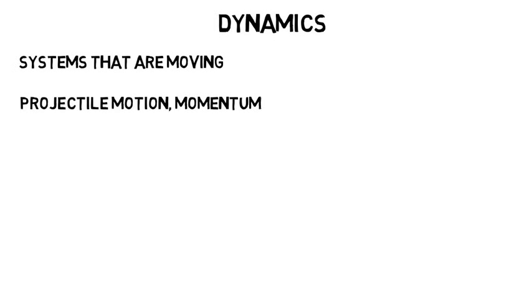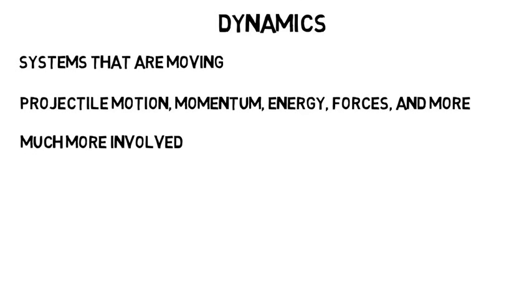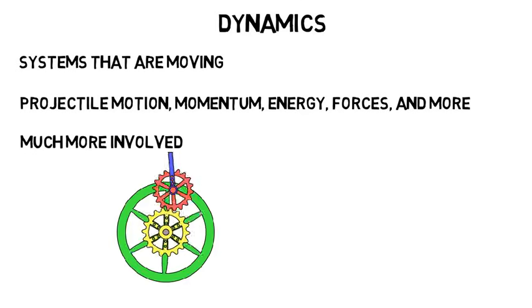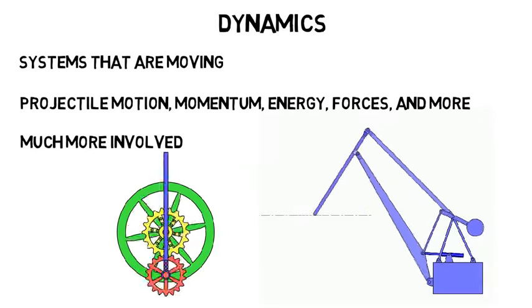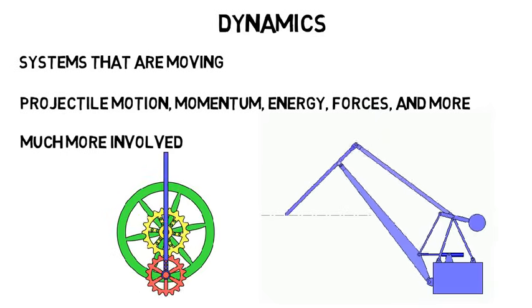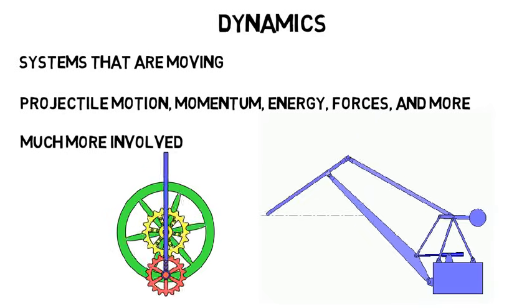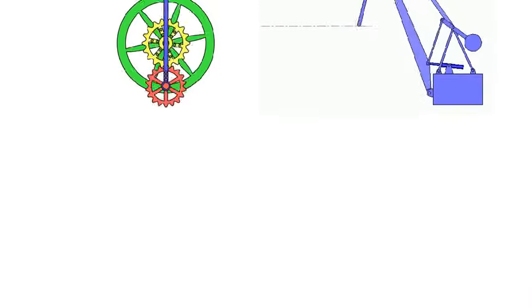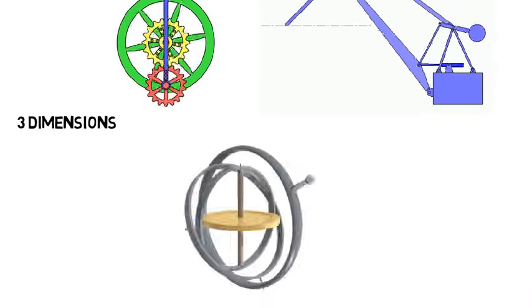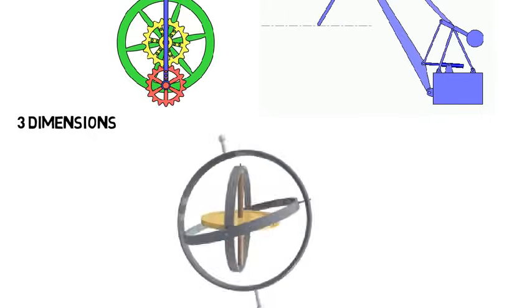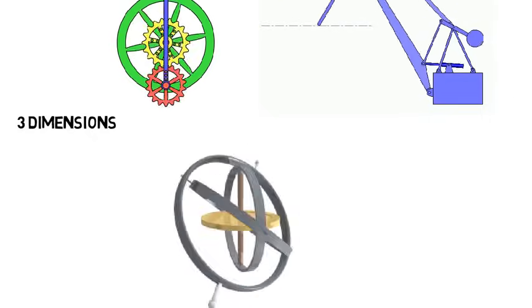Then the next class would be dynamics, where you look at systems that are moving. It's similar to your high school physics class with projectile motion, momentum, energy, forces, and more, but is much more involved. You'll look at the motion of much more complex systems and have to find things like velocity, acceleration, energy, force, and more of different parts of that system. Then your third year, you'd even take a more advanced version of this class, where you'll look at these complex systems, but now in three dimensions. As you can probably already see, mechanical engineering involves a lot of advanced physics.